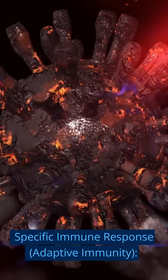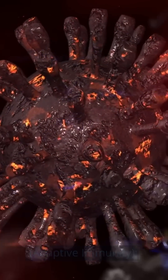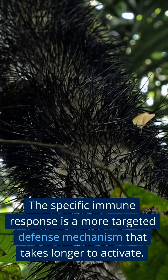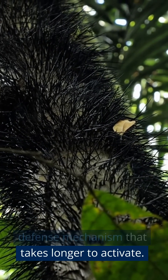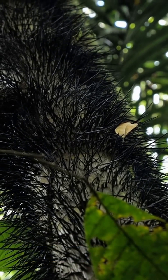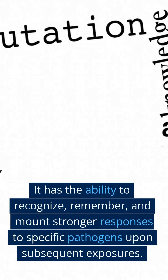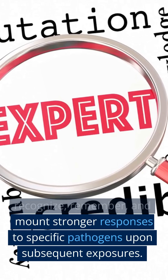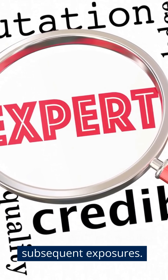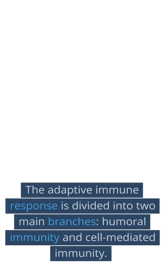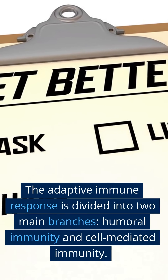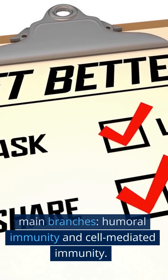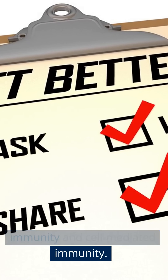Specific immune response — adaptive immunity. The specific immune response is a more targeted defense mechanism that takes longer to activate. It has the ability to recognize, remember, and mount stronger responses to specific pathogens upon subsequent exposures. The adaptive immune response is divided into two main branches: humoral immunity and cell-mediated immunity.